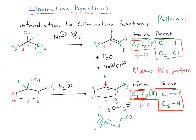So always this pattern. We're always going to form a carbon-carbon pi bond. We're always going to break carbon-hydrogen, and we're always going to break carbon-to-leaving group. In this case, it's chlorine, which is our leaving group.